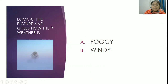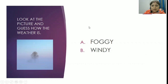Next question. Look at the picture and guess how the weather is. Option A: foggy. Option B: windy. Children, you can see in the picture the visibility is almost zero, so the weather is foggy. Correct answer is Option A, foggy.